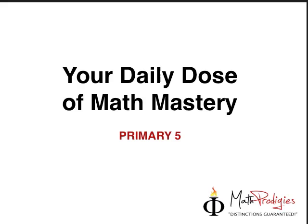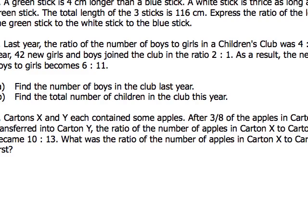Today we have a huge question, so let's move in immediately. It says last year the ratio of the number of boys to girls in the children's club was 4 is to 7. This year, 42 new girls and boys joined the club in the ratio 2 is to 1. As a result, the new ratio of boys to girls becomes 6 is to 11.